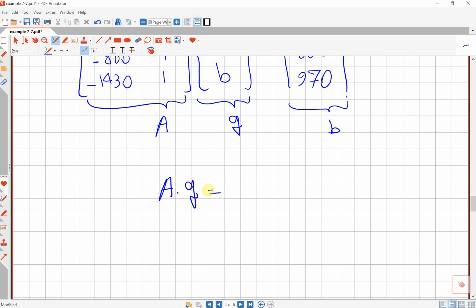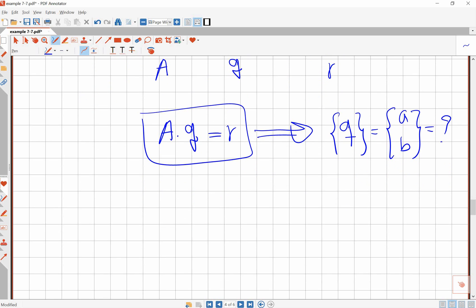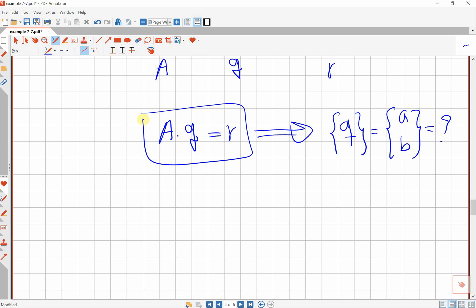In order to find this q when the size of A is greater than size of q, you need to use a couple of methods. One of the methods that we're gonna use is called least square method or regression. In order to use that one, you have to find the transpose of A, and you have to multiply this matrix to both sides of this equation. So A transpose times A times q equals to A transpose times r.